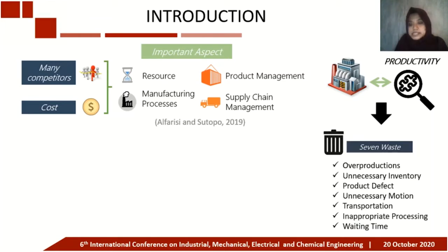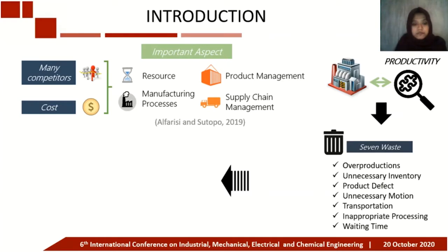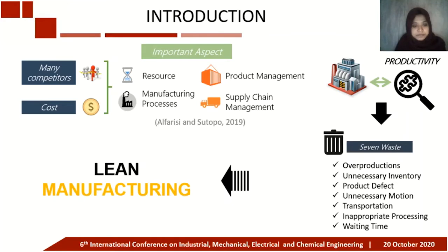In the industrial world, waste elimination is known as the seven wastes: overproduction, inventory, product defects, unnecessary motion, transportation, inappropriate purchasing, and waiting time. The powerful tool to reduce waste is lean manufacturing.